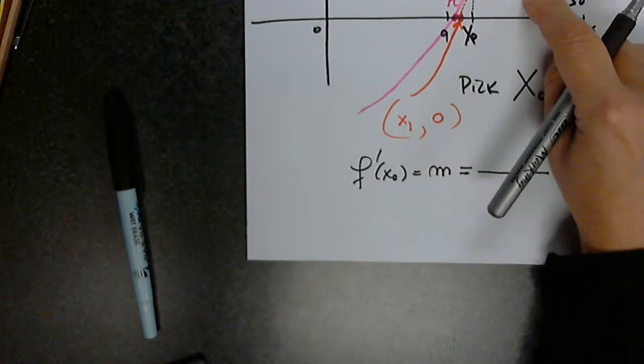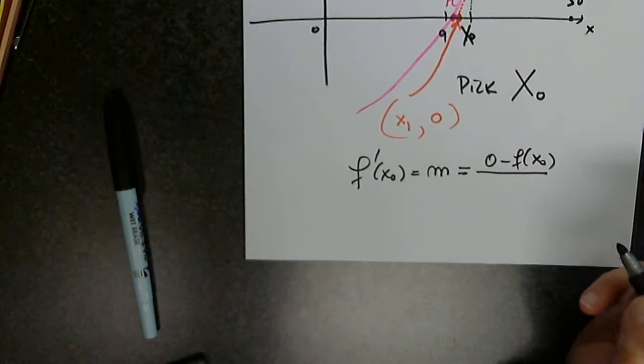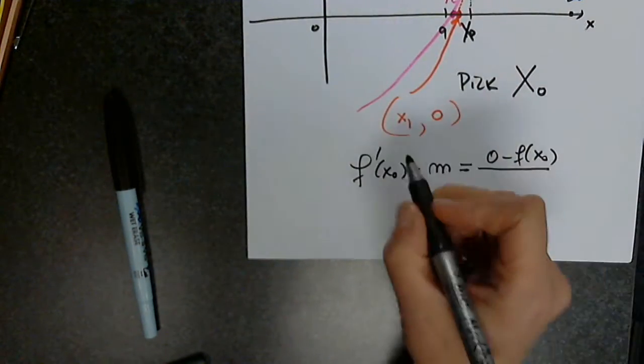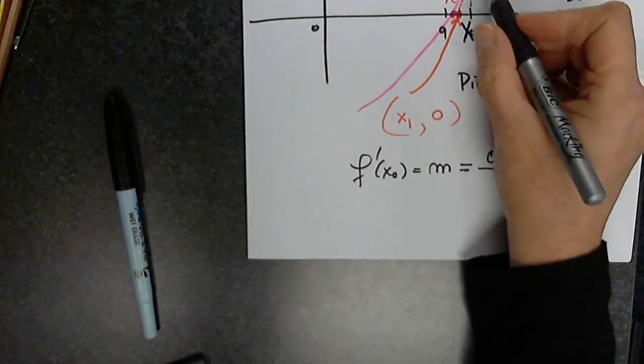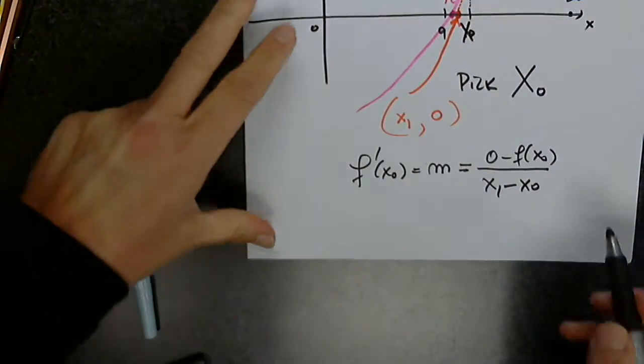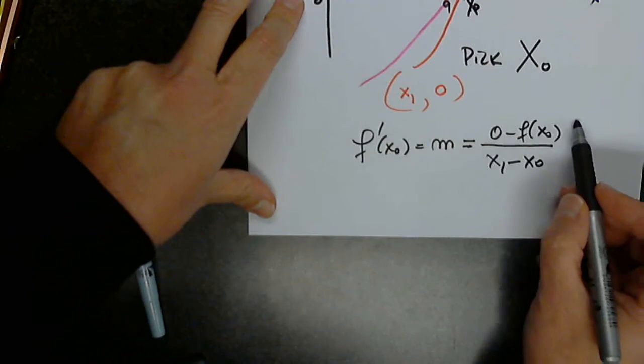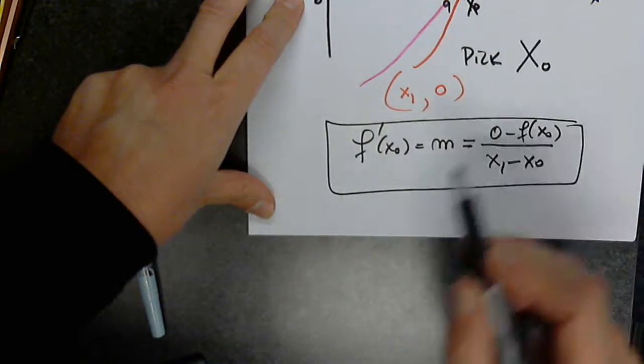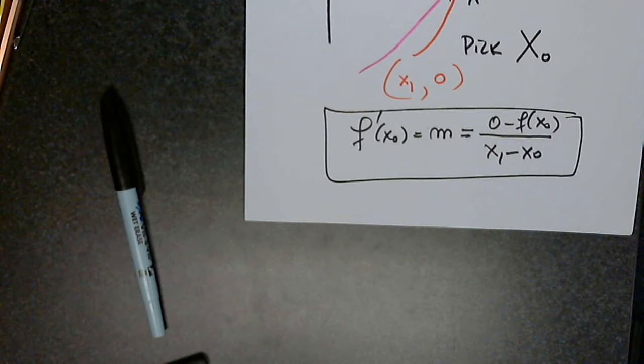Can anyone give us what to write? 0 minus f of x0 over x1 minus x0. Excellent. So now forget about this symbol here, I have an equation in which what do you think I'm going to solve for? x1.